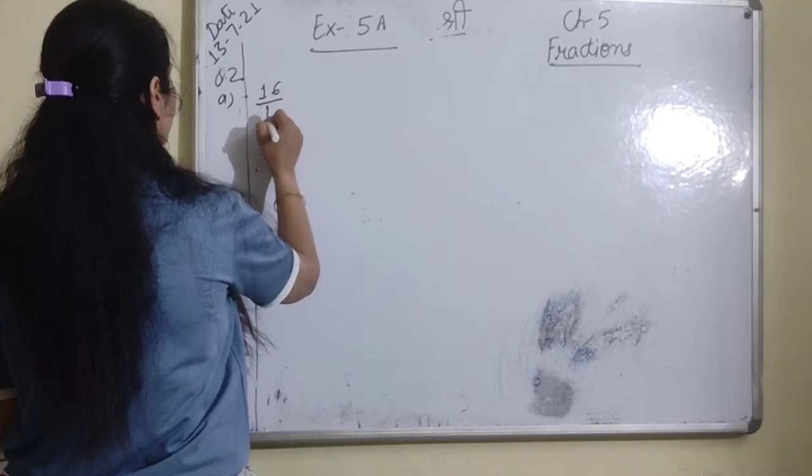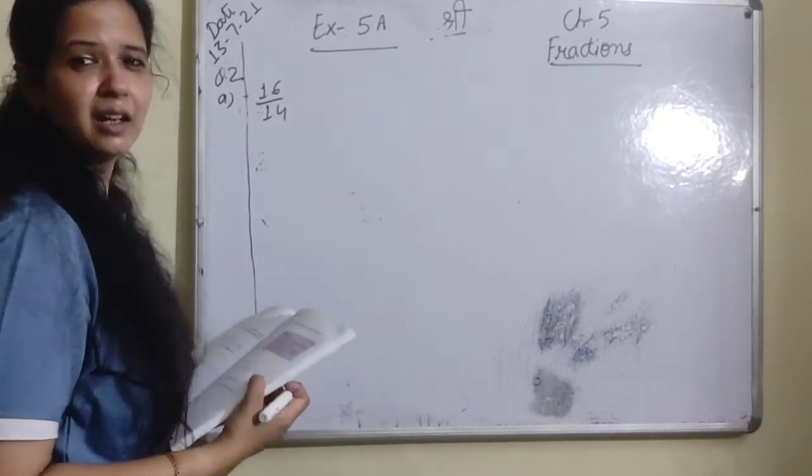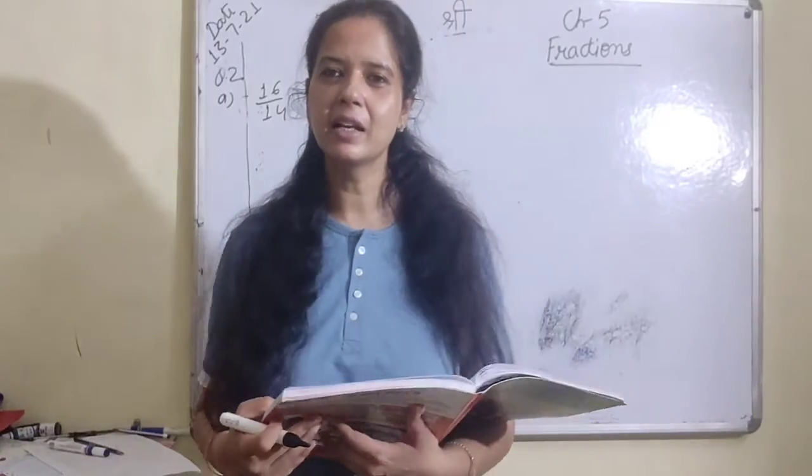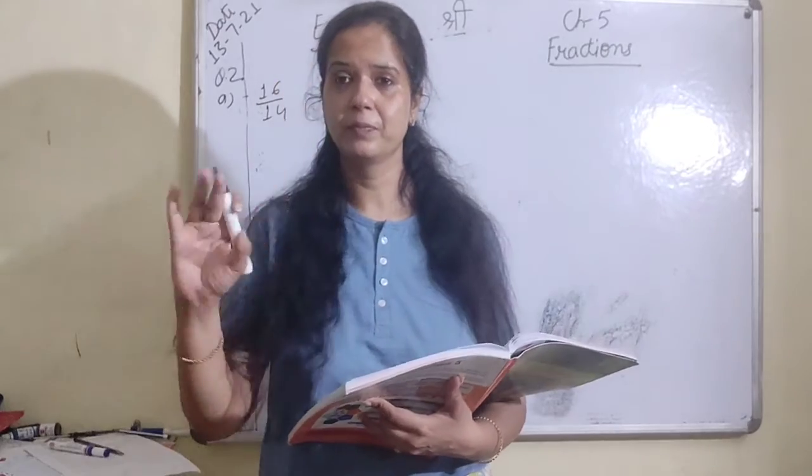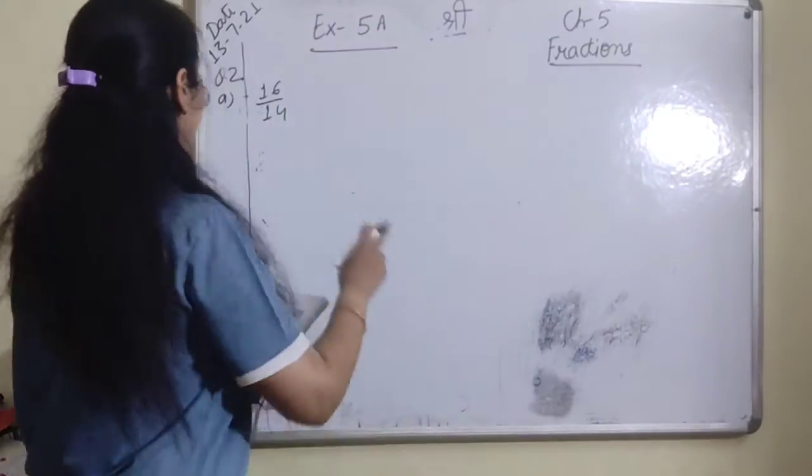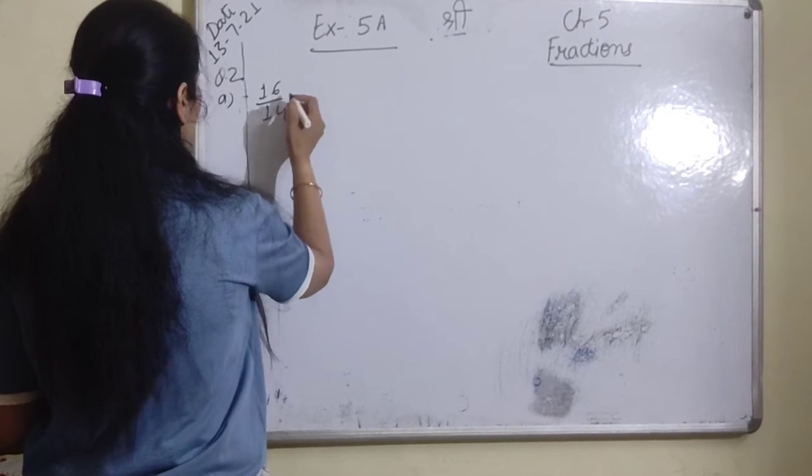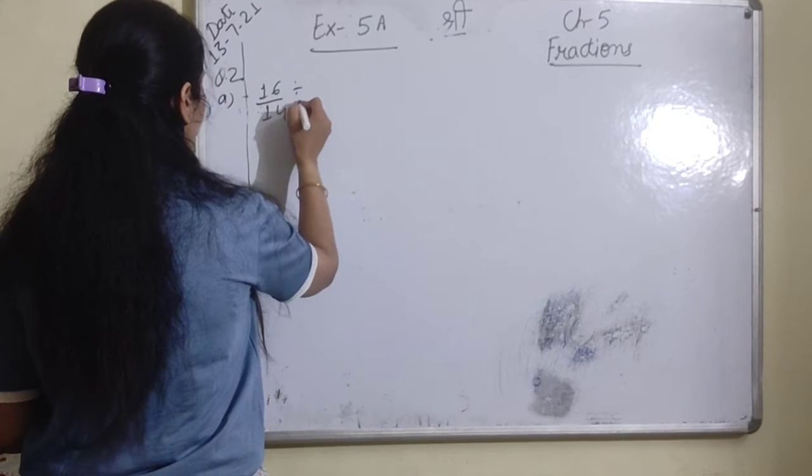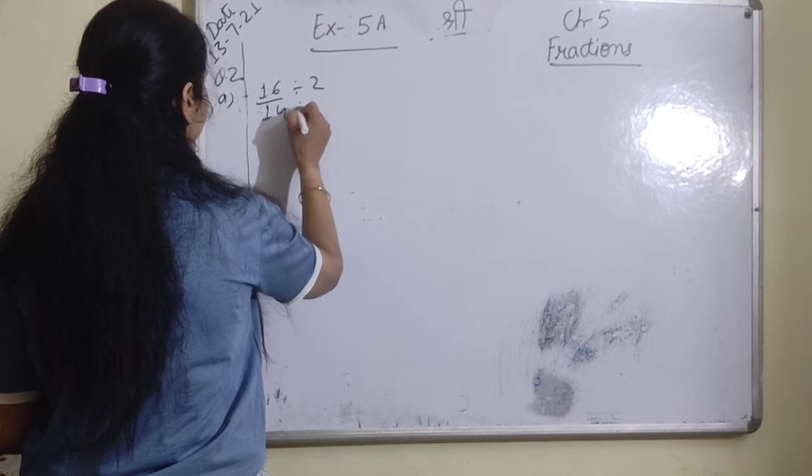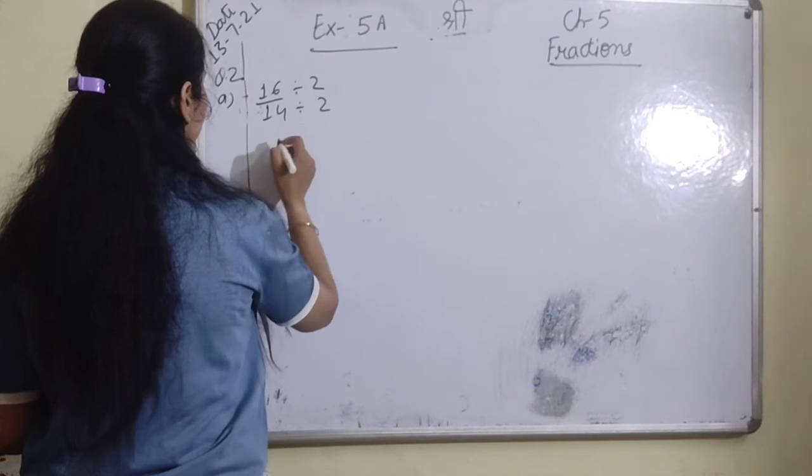16 upon 14. There are two methods. If you know the highest common factor directly, you can write it easily. Highest common factor is 2. So you divide by 2.